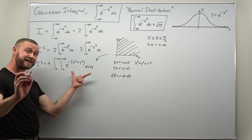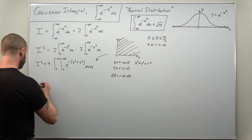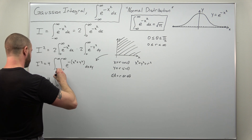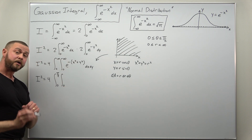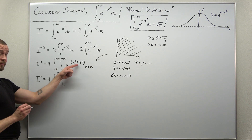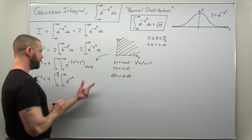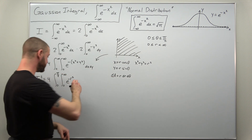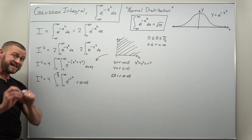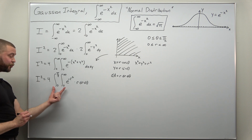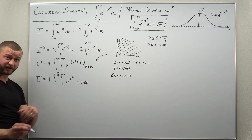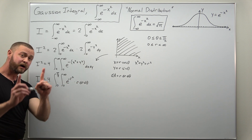We now have everything needed to convert our double integral in rectangular coordinates to polar coordinates. For I squared, we get the integral from zero to pi over two for theta, the integral from zero to infinity for r, with the integrand e to the negative r squared, and the area element r dr dθ. Since our integrand factors into a function of r only — there's no theta function — we can split this into a product of single-variable integrals.